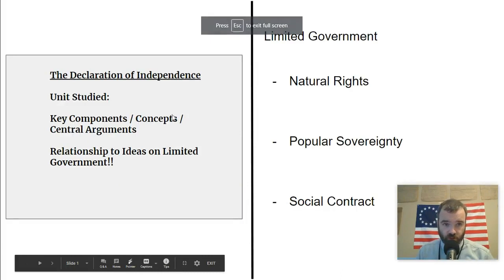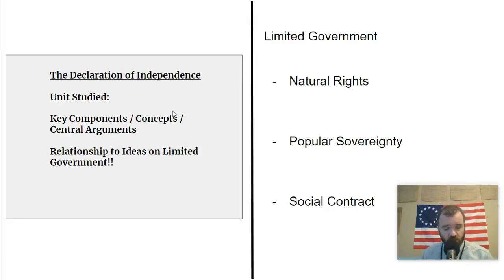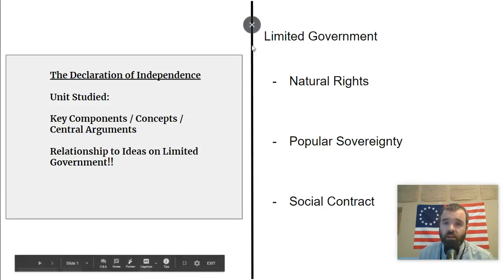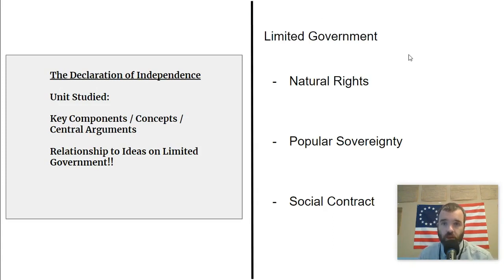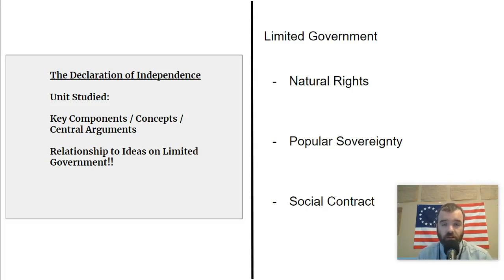On the left here we have the flashcard. The first document is the Declaration of Independence. This was clearly studied in our first unit on constitutional origins. The key thing you need to know about the Declaration of Independence — in addition to the fact that historically it simply declared independence of the United States from the British — is that it underlies the U.S. political system philosophically. Limited government is the core idea. The U.S. government is not going to have unlimited power, not going to be a monarchy, and these ideas are embodied in the Declaration of Independence.